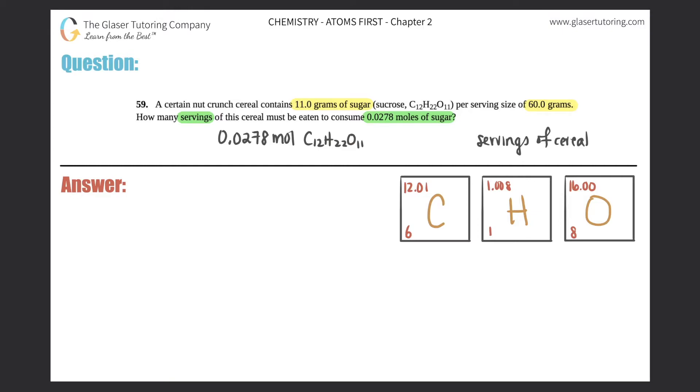They said that this certain nut crunch cereal contains 11 grams of sugar per a serving size of 60 grams. So immediately you see the word 'per' - per means division or a ratio, because a ratio is something over something else.